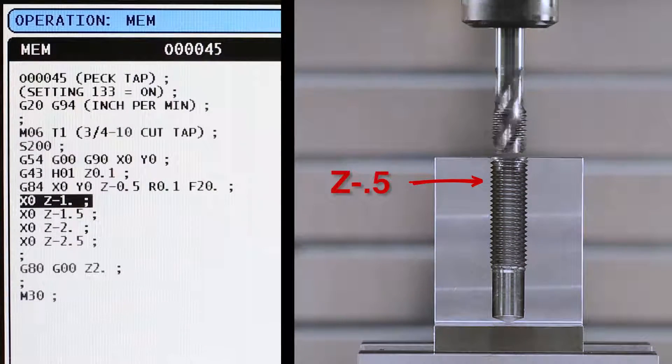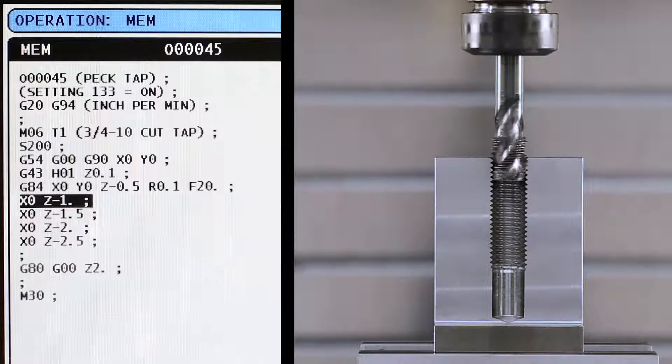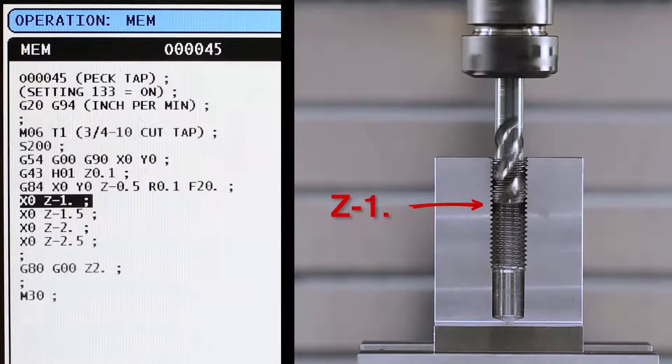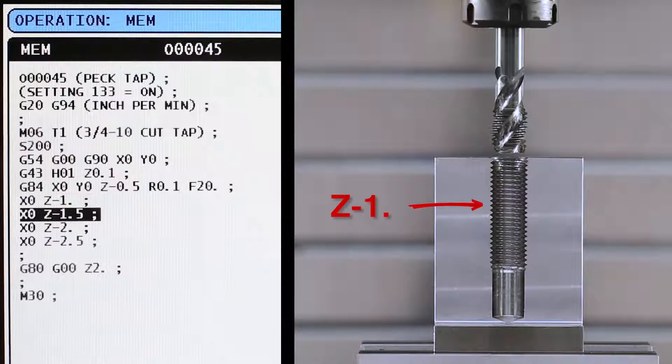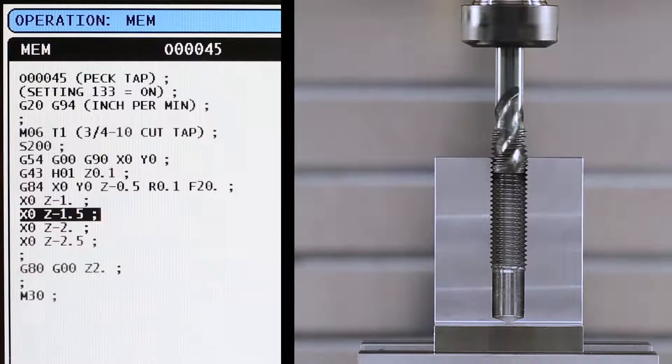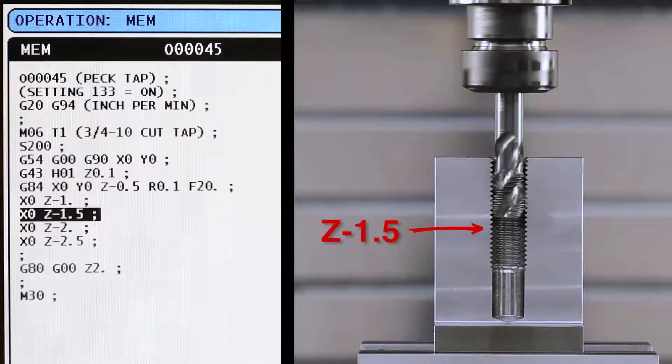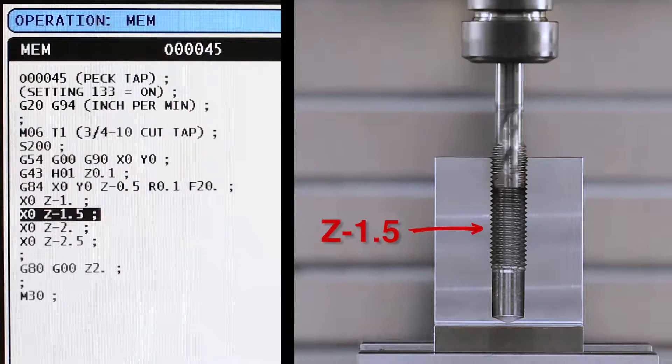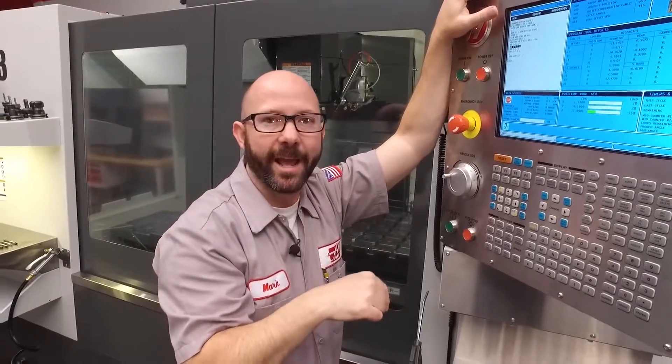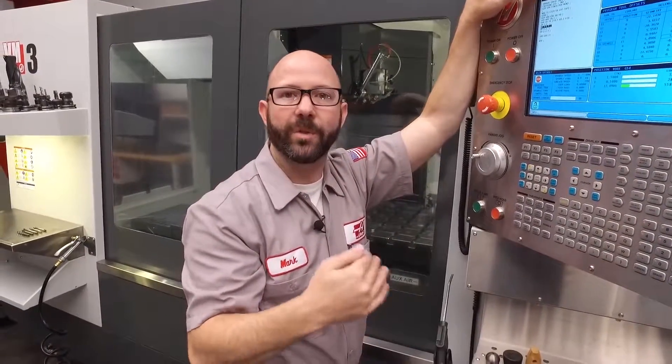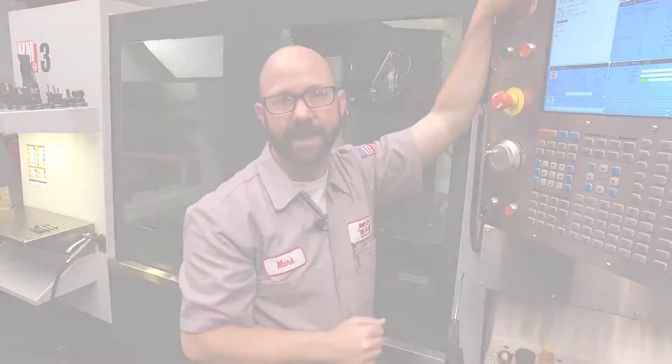Next, we're gonna tap a hole again at X zero, Y zero, this time to a depth of Z minus one inch. At the next X, Y location, which is still at X zero, Y zero, we're gonna tap a hole to Z minus 1.5. By commanding the exact location that we're at over and over again with increasing Z depths, we peck tap.